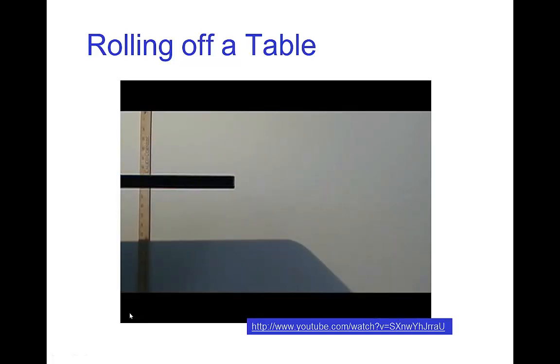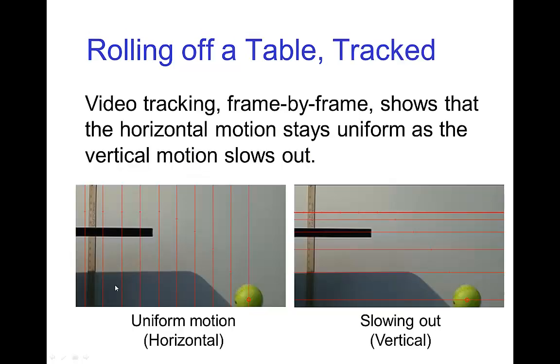So, there you see that. Now, if we go and do some video tracking of the position of the ball on each frame in that video, you see marking here the position of the ball and looking at the horizontal spacings, basically, they stay constant. The ball, as soon as it leaves the table, the vertical spacings slow out.